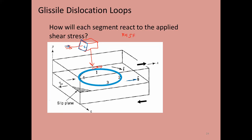After going all the way through, the loop looks something like this, because the Burgers vector connects from start to finish, and I've already shown the direction and sign of the Burgers vector.